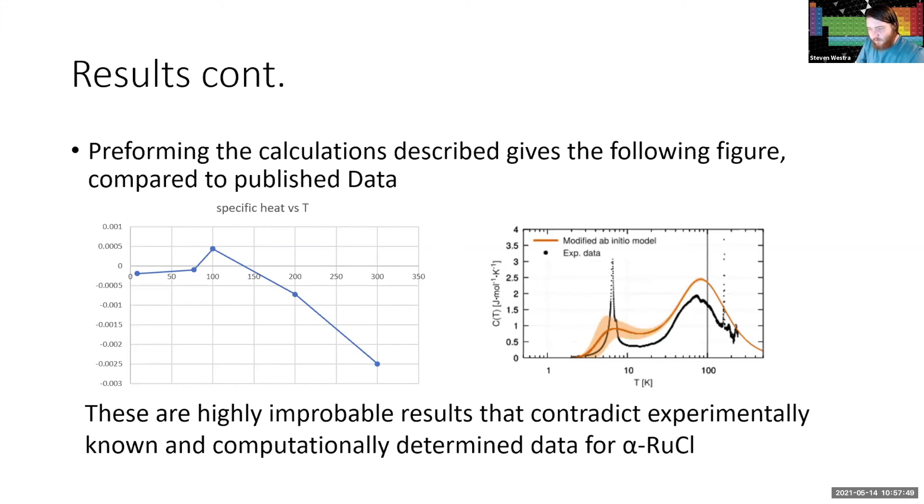So performing calculations described earlier gave us the graph on the left for our specific heat versus temperature. And on the right, we have a published graph showing a comparison of existing computational models of alpha-ruthenium chloride and experimentally collected data of its heat capacity. So one thing that we noticed in this is that these are rather highly improbable results. We are not really very close at all to seeing a good match with existing data.